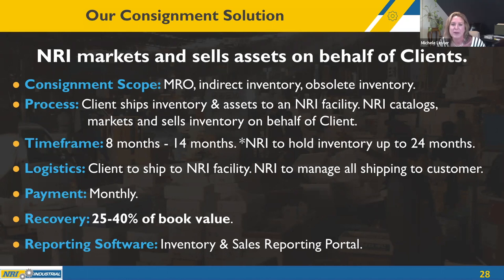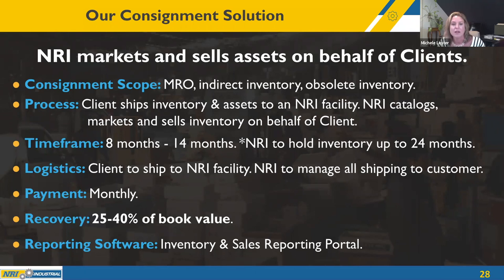About the consignment program: the scope includes MRO, indirect inventory, and obsolete inventory. The process is the client ships assets to one of NRI's facilities — we can also manage logistics for you. The complete recovery time frame is 8 to 14 months and we hold inventory up to 24 months. Logistics: clients ship to NRI. Payment is monthly. Recovery is 25 to 40% of book value. Reporting software is an inventory and sales reporting portal.